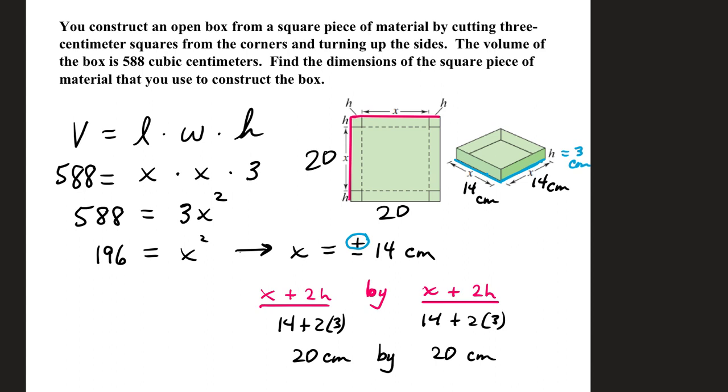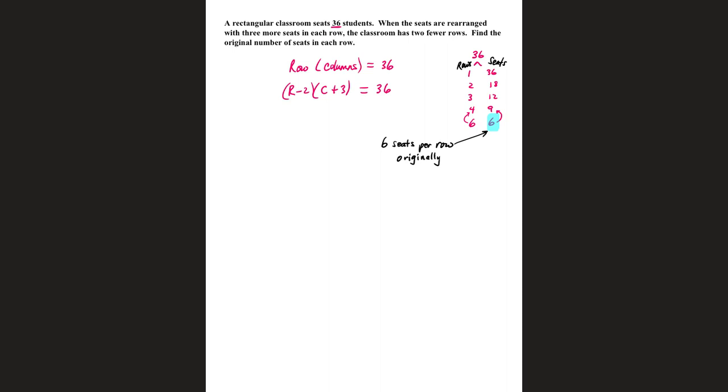Going back to our original piece of material, if x is 14 and each little h is 3, we have 14 plus a couple of h's, that's 20 total. And then the same thing for the other side, x plus 2h. We have x here, a couple of h's from the cutouts, x plus 14 plus 2 times 3, that's also 20. So the original piece of material is 20 centimeters by 20 centimeters.